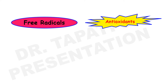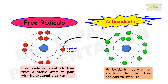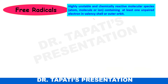Today's topic of the presentation is free radicals and antioxidants. Free radicals are highly unstable and chemically reactive molecular species containing at least one unpaired electron in the valency shell or outer orbit. They may be an atom, molecule, or ion.